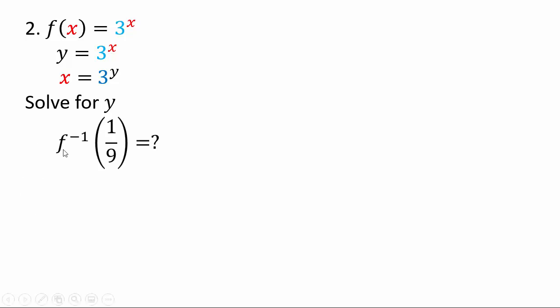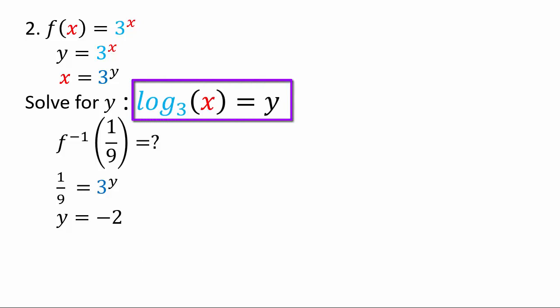In the meanwhile, f inverse of 1 over 9 — what would that be? The inverse function evaluation means 1 over 9 is the input for the inverse function, which means it's the output for the original function. So we have 1 over 9 equals 3 to the power y. Since 9 is 3 squared, and reciprocal means negative exponents, 3 to the negative 2 is 1 over 9, so our answer is negative 2. Our notation would be log base 3 of x equals y — that is our inverse function.